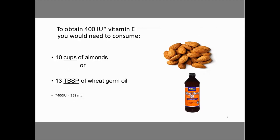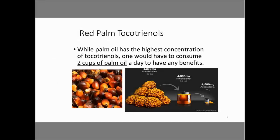Here's the first introduction to the FDA labeling changes happening now, with full compliance expected within the next year and a half. 400 international units, which is a unit of measurement, is now going to be designated as a milligram weight — 268 milligrams. Red palm tocotrienols: while palm oil has the highest concentration, one would have to consume two cups of palm oil a day to see any benefits. It takes about 60 pounds of crude palm oil to yield 41 grams in a typical bottle of red palm tocotrienols — quite a lot of concentration.